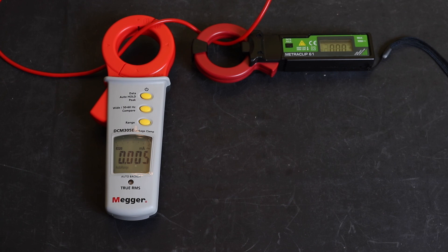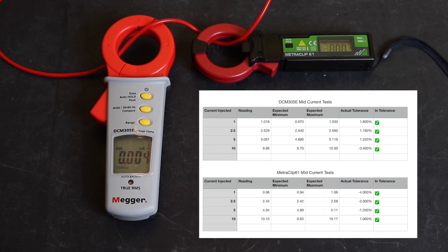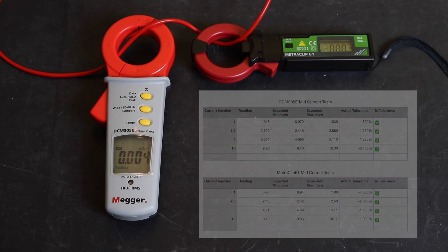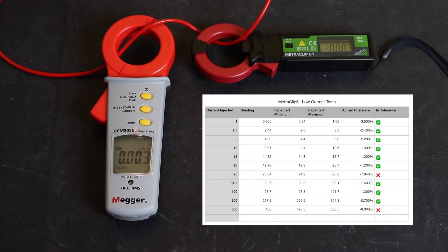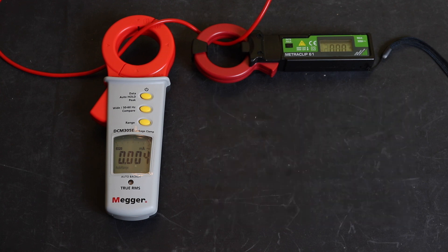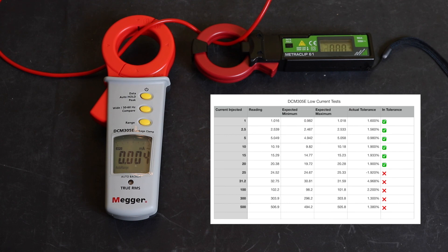This is the results table for the mid-range of currents from 10 amps down to 1 amps. You can see there I've got green ticks across all the readings there. They are all within tolerance, so no problems there whatsoever. I'm going to put this next table up. This is for the low milliamps range. So this is 500 milliamps down to 1 milliamp. You can see that for the Metrawatt I've got 2 readings that are out of tolerance towards the top end of the range. And then I've got actually 5 readings that are out of tolerance for the DCM305E.